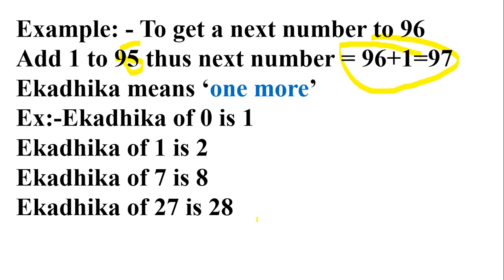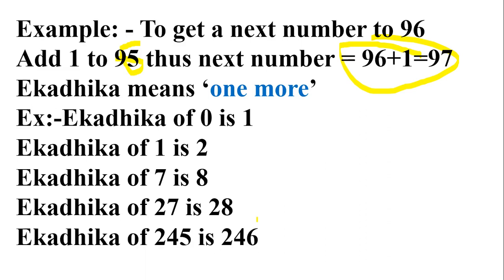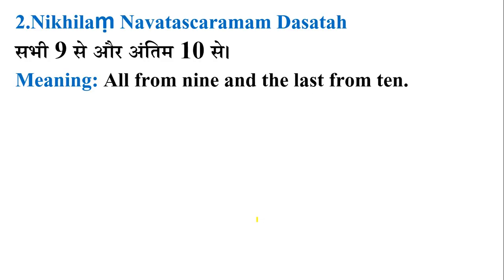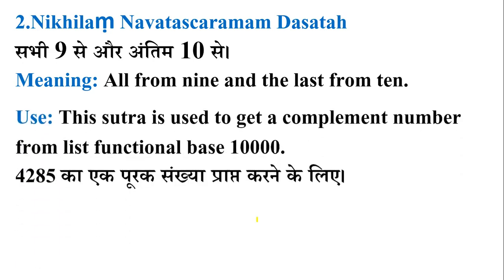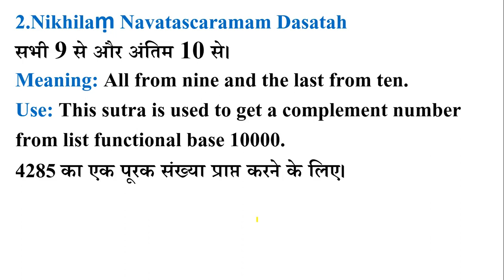Now I will take you to the next sutra — Nikhilam Navatascaranam. It is a very lengthy and difficult Sanskrit name to pronounce. I have already spoken about this sutra in my previous video. The meaning of this sutra is 'all from 9 and last from 10' — in Hindi: Sabi Nao Se aur Antim Das Se. Let me give you an example of what it means and how you can use it. You may get a problem where you have to calculate the complement number with a base of 1000.